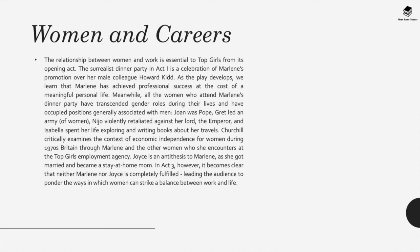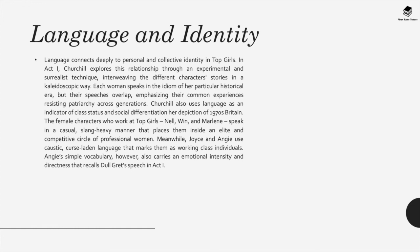Joyce is an antithesis to Marlene, as she got married and became a stay-at-home mom. In Act 3, however, it becomes clear that neither Marlene nor Joyce is completely fulfilled, leading the audience to ponder the ways in which women can strike a balance between work and life. Regarding language and identity: language connects deeply to personal and collective identity in Top Girls. In Act 1, Churchill explores this relationship through an experimental and surrealist technique, interweaving the different characters' stories in a kaleidoscopic way. Each woman speaks in the language of her particular historical era, but their speeches overlap, emphasizing their common experiences resisting patriarchy across generations.